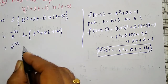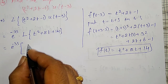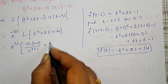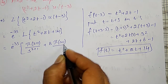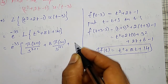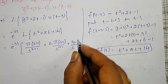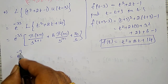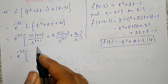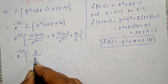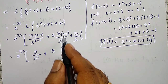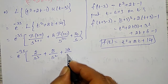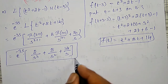Therefore, the Laplace Transform becomes e to the power minus 3s into Laplace Transform of (t squared plus 8t plus 14). Using the gamma function formula: Laplace Transform of t squared is 2 factorial divided by s cubed, which is 2 over s cubed; Laplace Transform of 8t is 8 times 1 factorial over s squared, which is 8 over s squared; and Laplace Transform of 14 is 14 over s. The required final answer is e to the power minus 3s times (2 over s cubed plus 8 over s squared plus 14 over s).